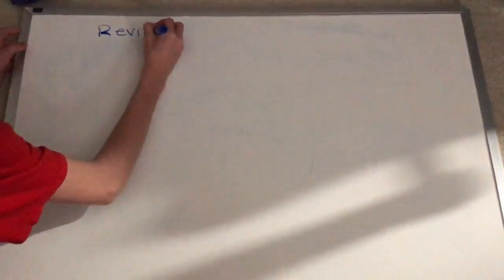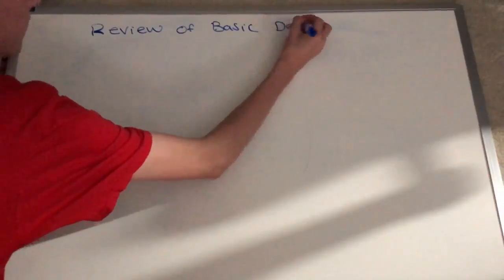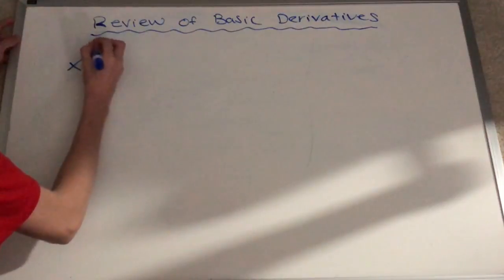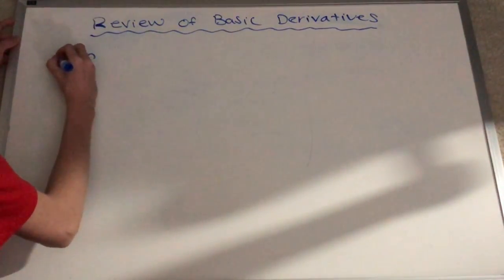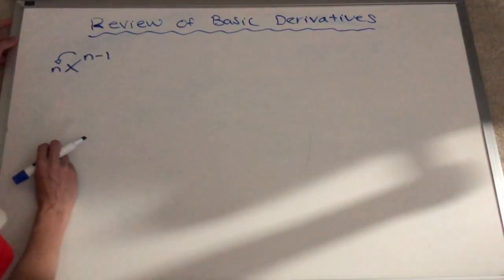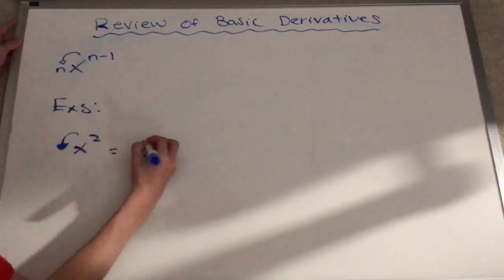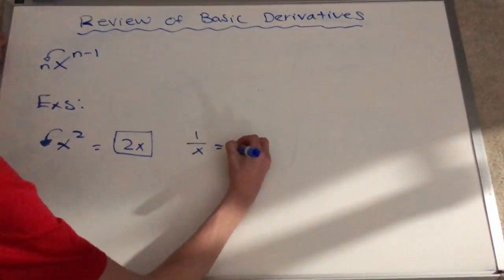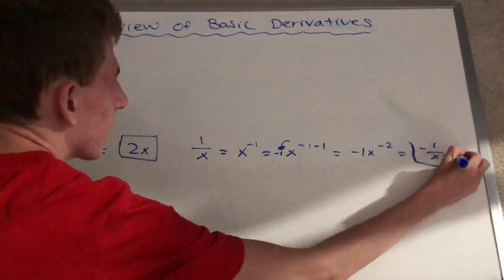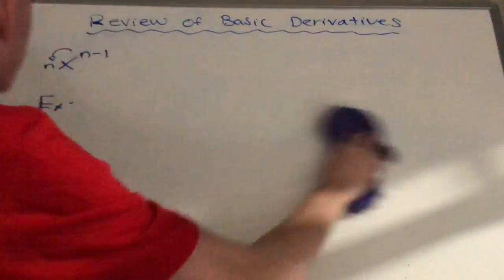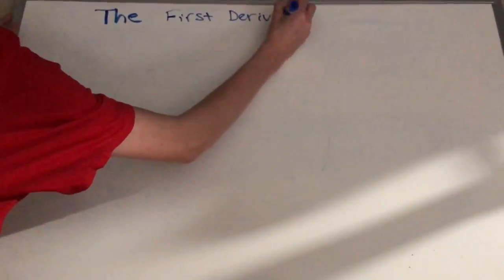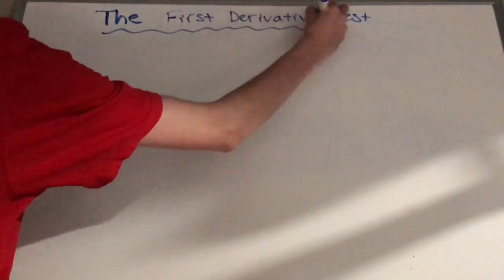The first thing we're going to go over is how to do a basic derivative. When applying the power rule, you want to bring down the original exponent in front of the variable and then subtract one from the original exponent. Here are some examples to show the power rule being used. There are other derivative rules out there, but this is all we'll need to understand the first derivative test.